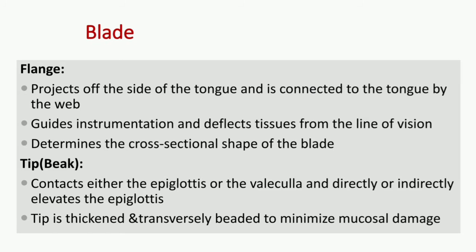The flange of the blade projects off the side of the tongue and is connected to the tongue by the web. It guides instrumentation and deflects tissues from the line of vision, and also determines the cross-sectional shape of the blade. The tip of the blade contacts either the epiglottis or the vallecula, and directly or indirectly elevates the epiglottis. The tip is thickened and transversely beaded to minimize mucosal damage.